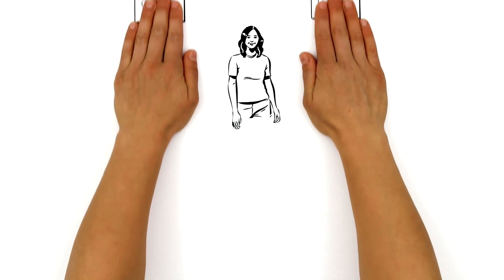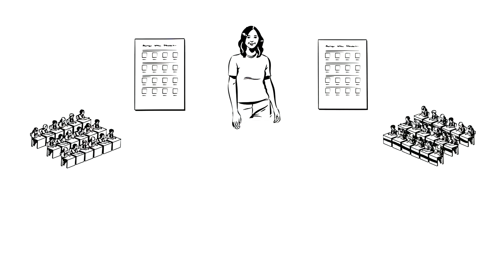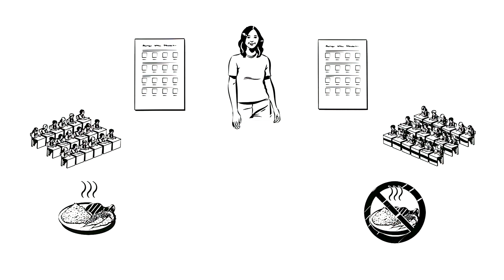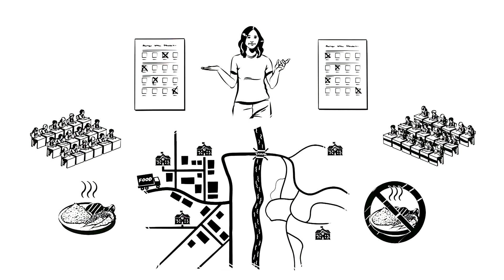So why not compare the performance at school of children who regularly get free lunch with that of children who do not get free lunch? This comparison is questionable too, since it is perfectly possible that the lunch would be distributed in schools where children already have a better diet and healthcare, so that their performance would be better from the start.